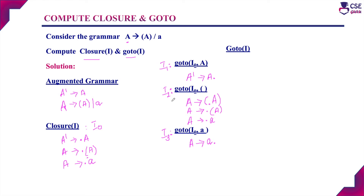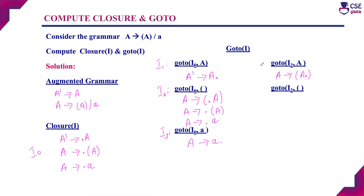Next, we have to check state I2. For state I2, we have to perform goto(I2, A), then goto(I2, open bracket), and goto(I2, terminal A). First, goto(I2, A): A derives open bracket — we perform a move on the dot, giving A dot and then closed bracket. After the dot, only a terminal symbol is there, so no need to add any productions. This state is I4.